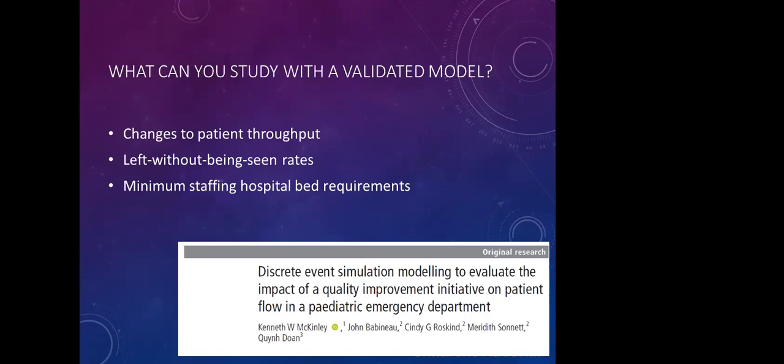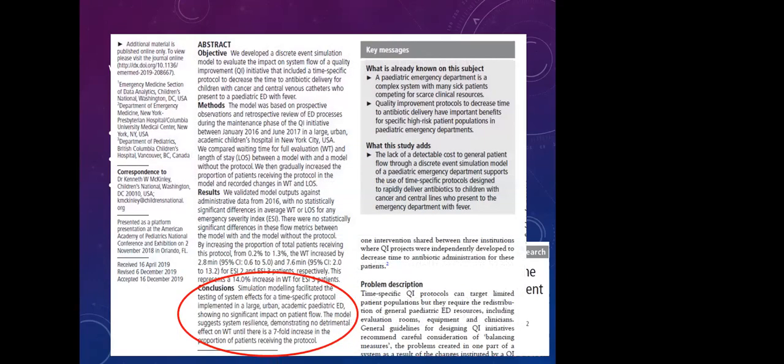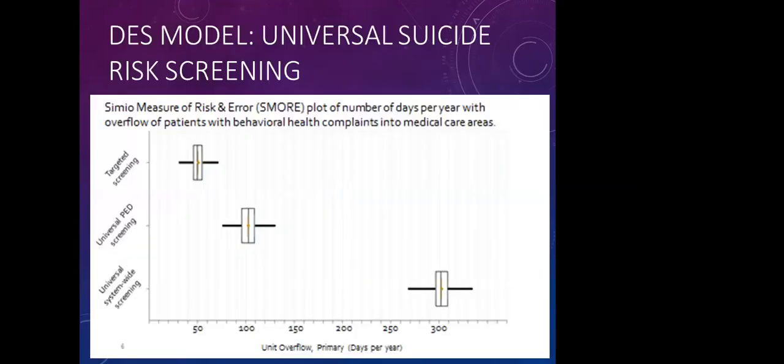There's no significant cost to patient throughput by implementing a time specific protocol designed to rapidly deliver antibiotics to children with cancer and central lines who present to the ED with fever. And in our model the population of cancer patients presenting to the ED would have to increase seven fold before there was a significant slowdown for other patients. And the project specific to Children's National - and this is part of a different project where I did not model the whole emergency department, but we were able to validate the model. Specifically for use for patients with behavioral health complaints, I worked with the ED psychiatry team to predict the system effects of implementing universal pediatric ED screening for suicide risk.